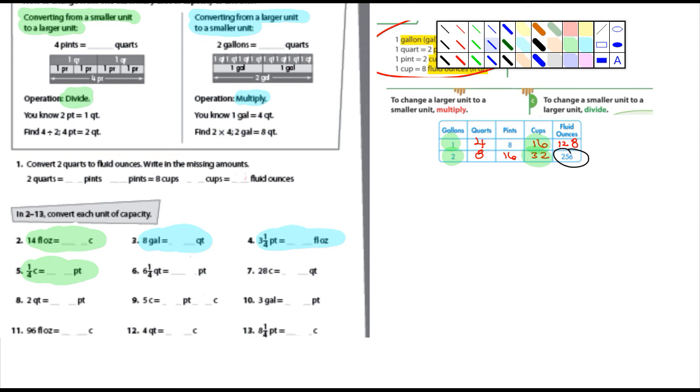So you're going from larger to smaller. And so what would you do to find the solution? You would multiply.